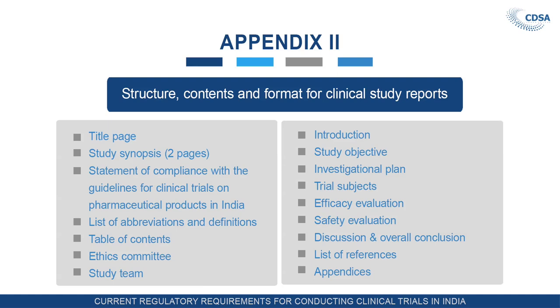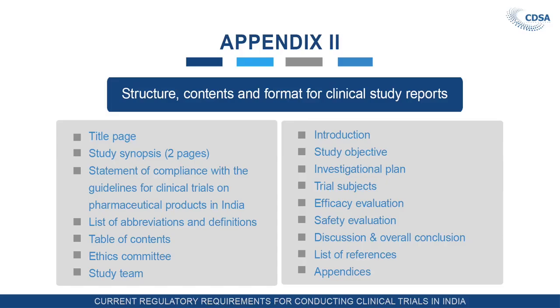The content also includes introduction and study objective — primary objective and secondary objective — with the purpose of the study. Then investigational plan, trial subject details including the number of subjects and their particulars, the procedure applied for efficacy evaluation, safety evaluation, discussion and overall conclusion. After completion of the study, the discussion by the study team and their inference or conclusion must be given, along with the list of references used during the study and the appendices.